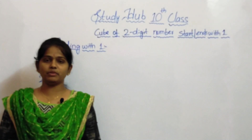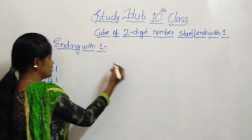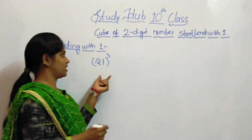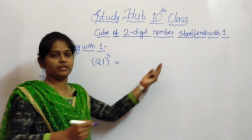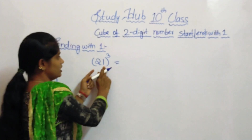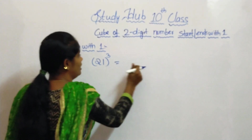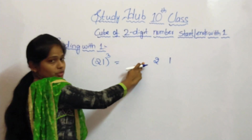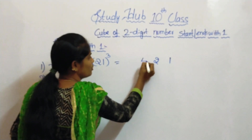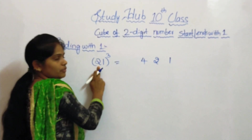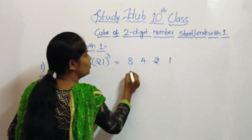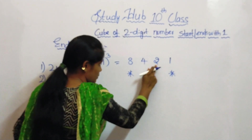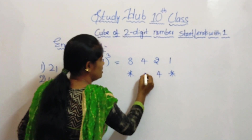Let's start our second condition, which is ending with 1. Our example is 21 cubed. This is similar to the previous condition, but we have to write from the fourth place to the first place. The fourth and third places will be the same numbers, 1 and 2. In the second place, take the square of 2 — 2 squared is 4. In the first place, write the cube of 2 — 2 cubed is 8. Now exclude the first and fourth places, and take twice of 2 and 4. 2 twos are 4 and 4 twos are 8.